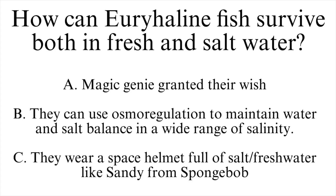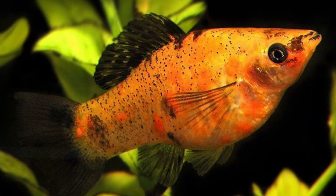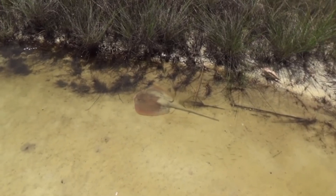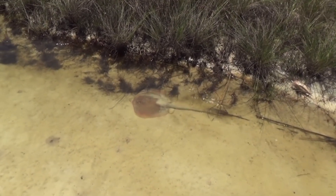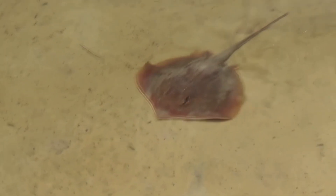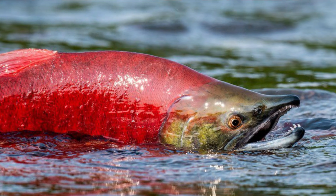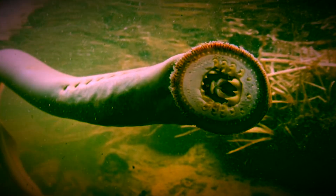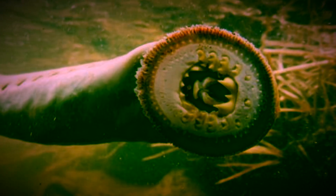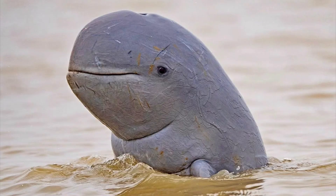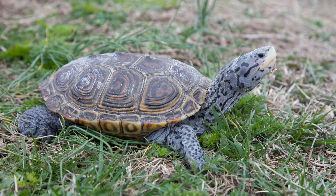So how can euryhaline fish survive both in fresh and saltwater? Besides bull sharks, we have the short-finned molly, who you could find in fresh, salt, or brackish waters. The absolutely gorgeous Atlantic stingray — so yes, the stingray shuffle still applies if you're in the rivers that pour into the Gulf of Mexico. Pink salmon, of course. Lampreys. The Irrawaddy dolphin, the diamondback turtle, and many, many more.